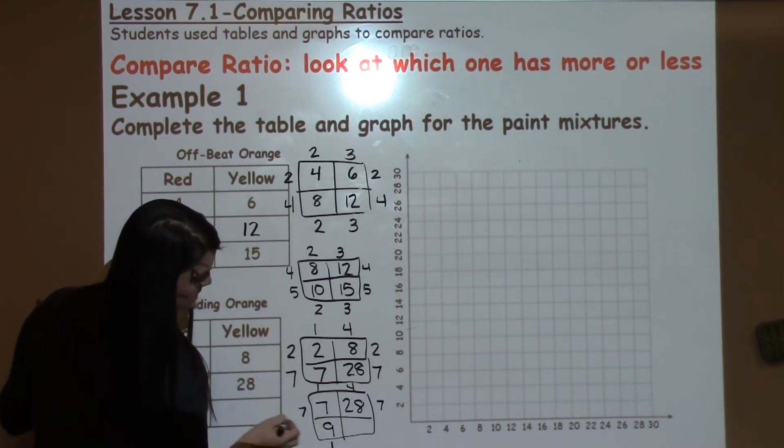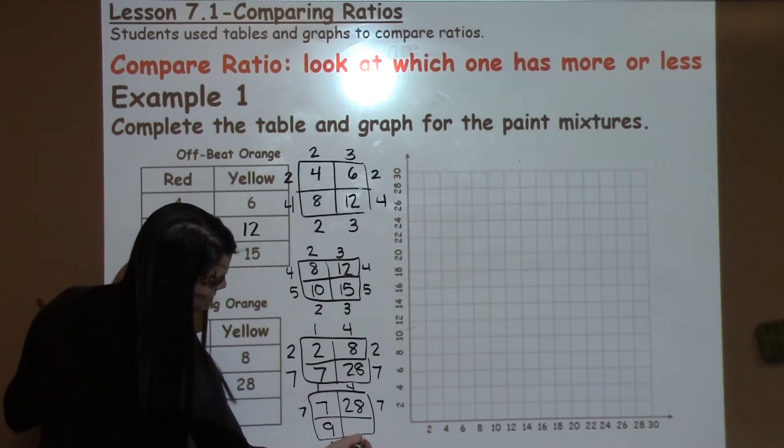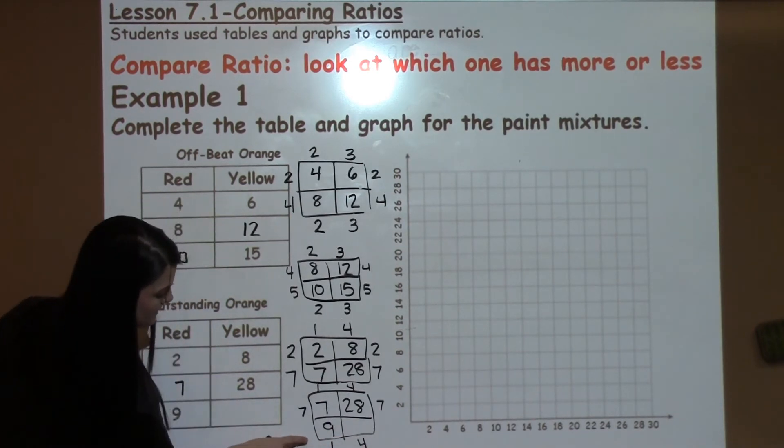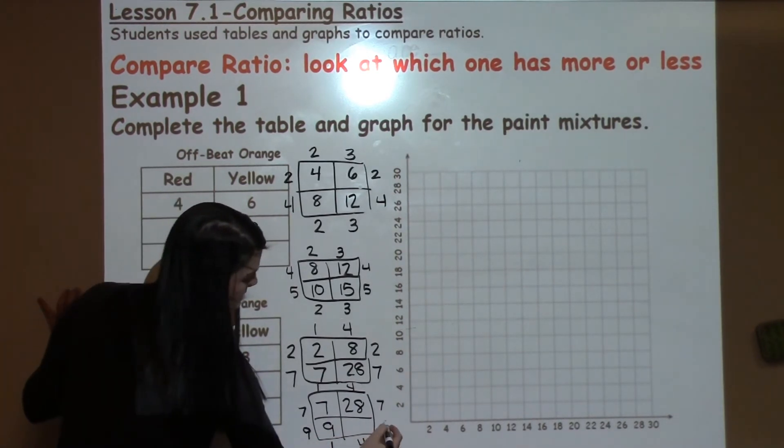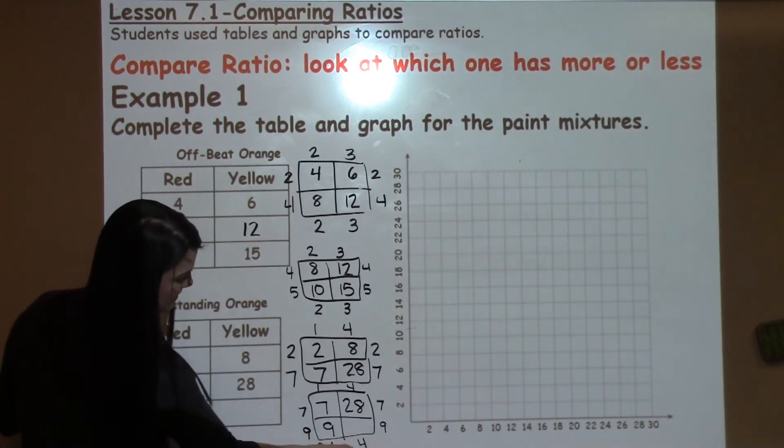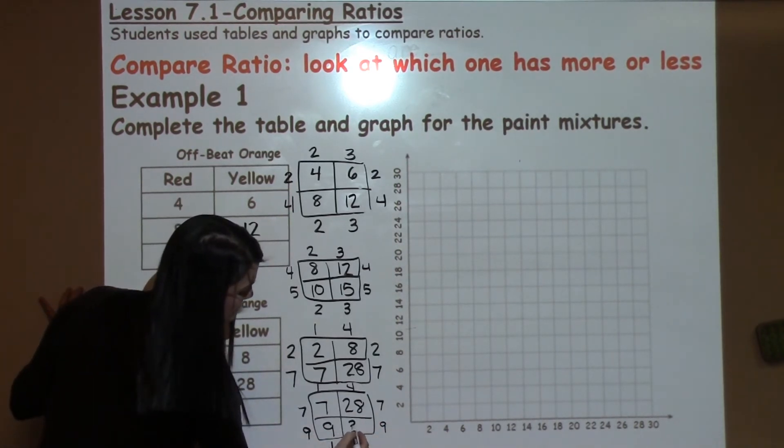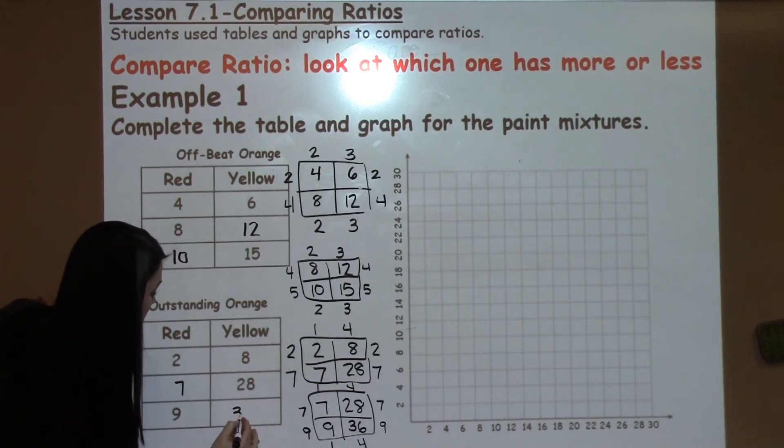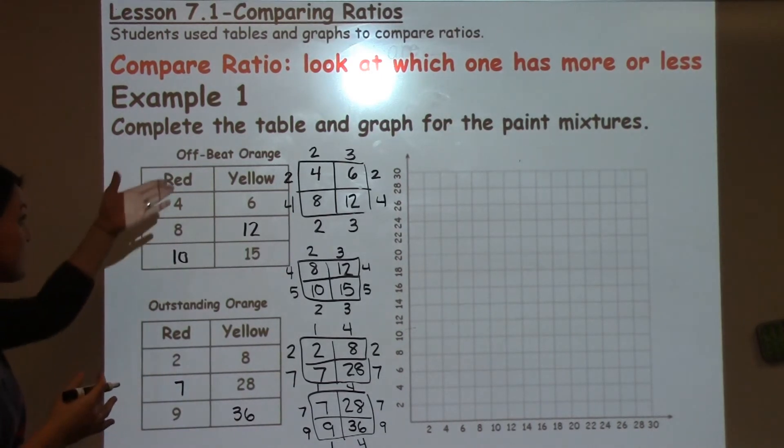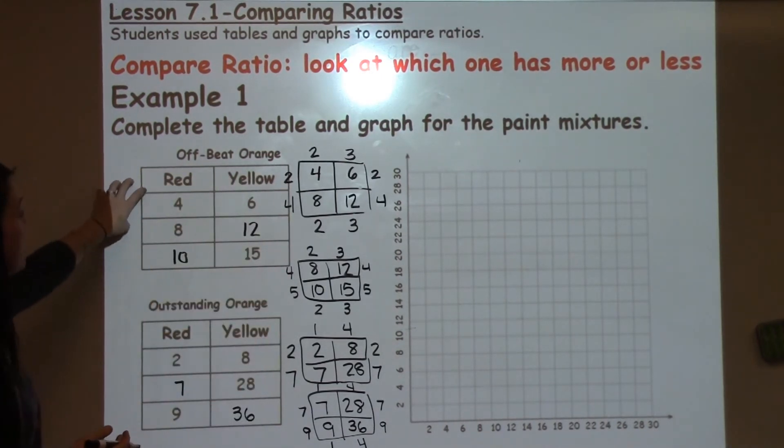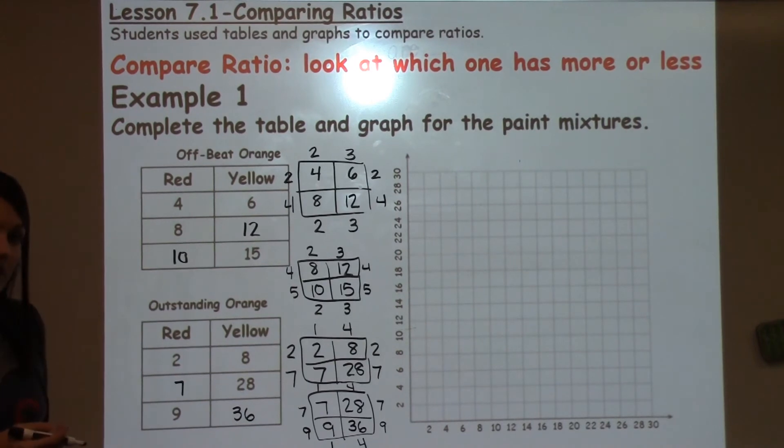Then my 1 is going to shoot straight down. My 4 is going to shoot straight down. 1 times what gives me 9? That would be 9. It shoots straight across to give me 4 times 9, which would be 36. So now I've completed all my factor puzzles to help me figure out the different ratio tables and help me complete the table.